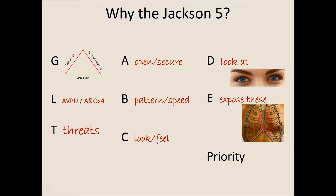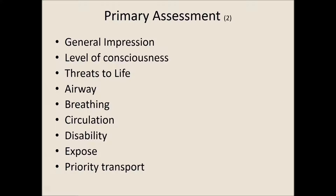The GLT, it's easy as A, B, C. Then you look at these. Expose these. To set your priority. To end that primary survey. General impression. Level of consciousness. Threats to life. Airway. Breathing. Circulation. Disability. Expose what you need to. Set the priority of transport. That GLT, it's easy as A, B, C.